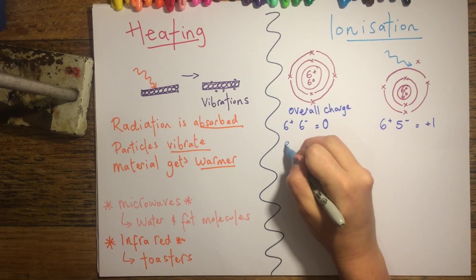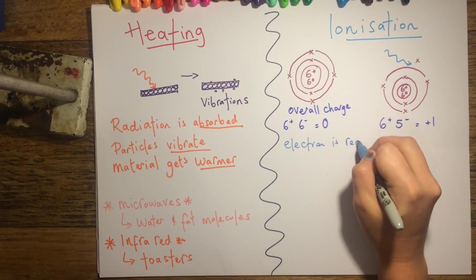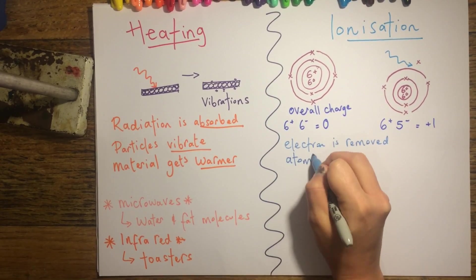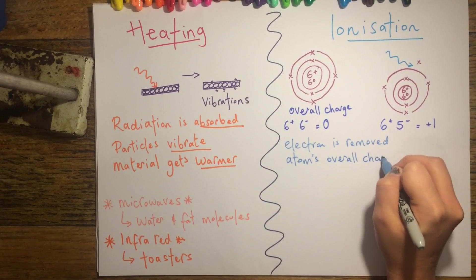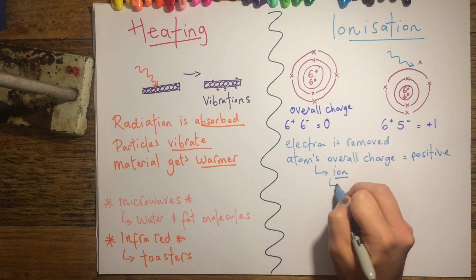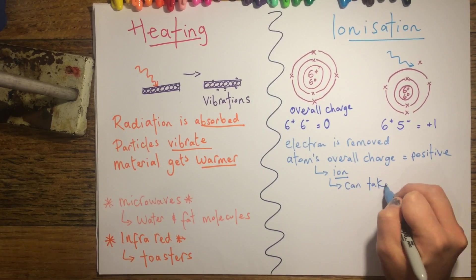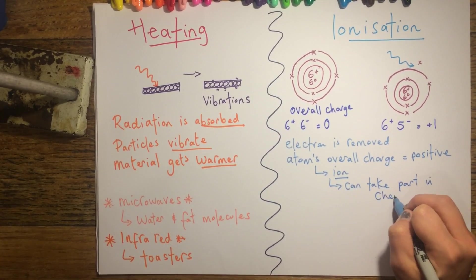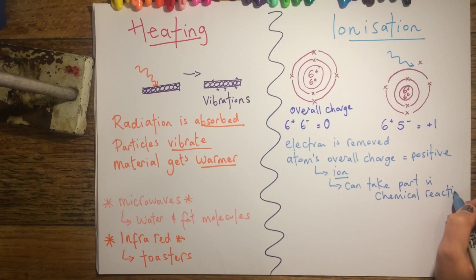When this electron is removed by a high energy photon, it's going to result in an atom that has a positive charge, and this is known as an ion. That's why the process is known as ionisation. Ions are quite special because they're more likely to be able to take part in chemical reactions that they might not have been able to take part in before.